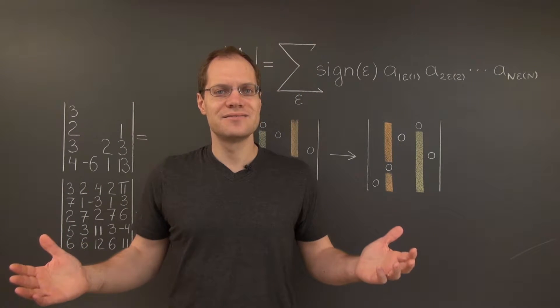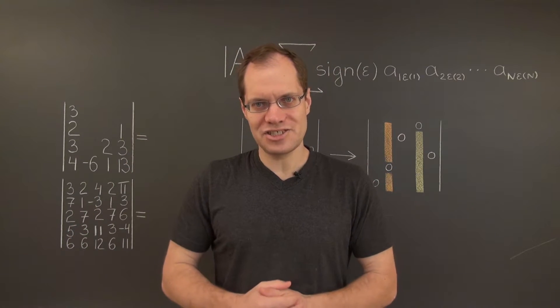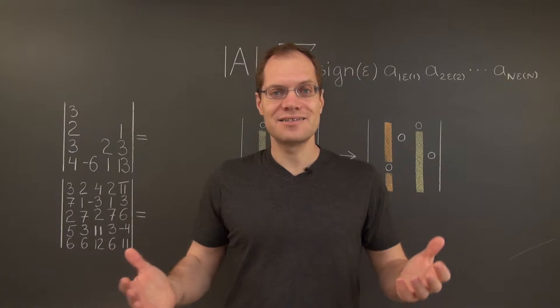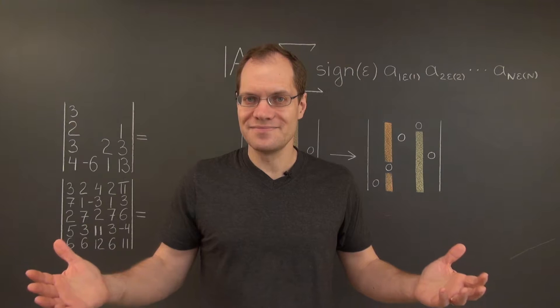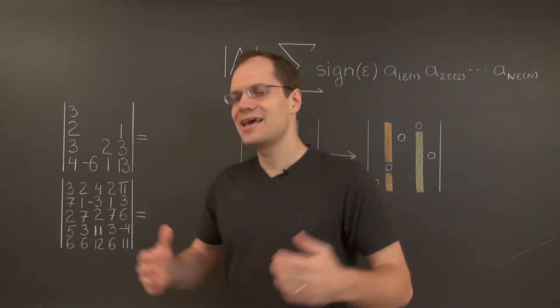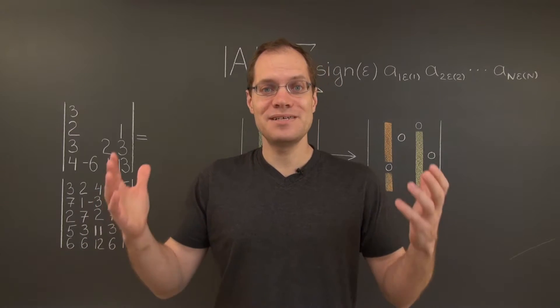On the one hand, the matrix will remain unchanged, and therefore the determinant will remain unchanged. On the other hand, by the alternating property, the determinant will change sign. Therefore the determinant of this matrix is a number that equals minus itself. So it's got to be zero.